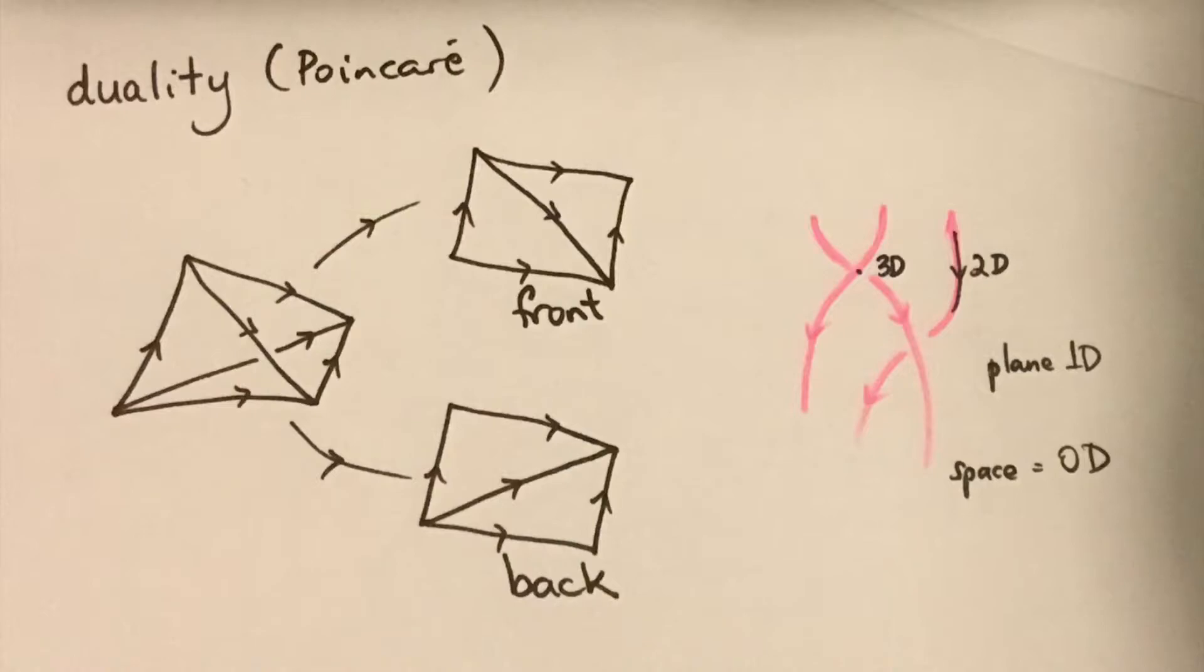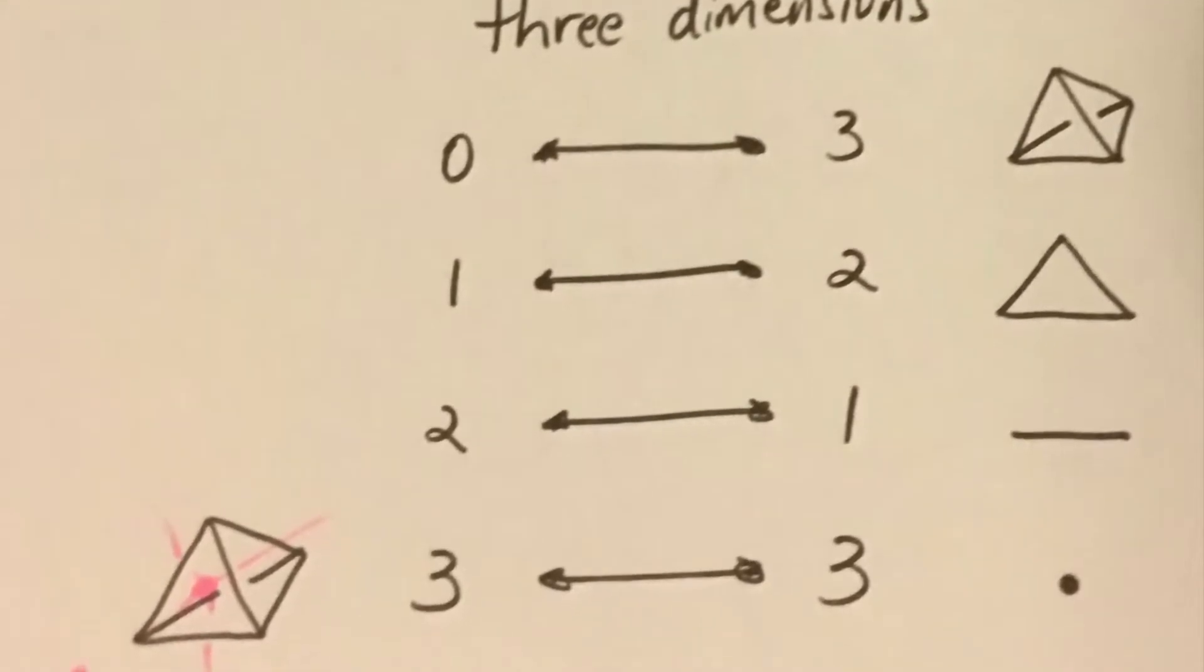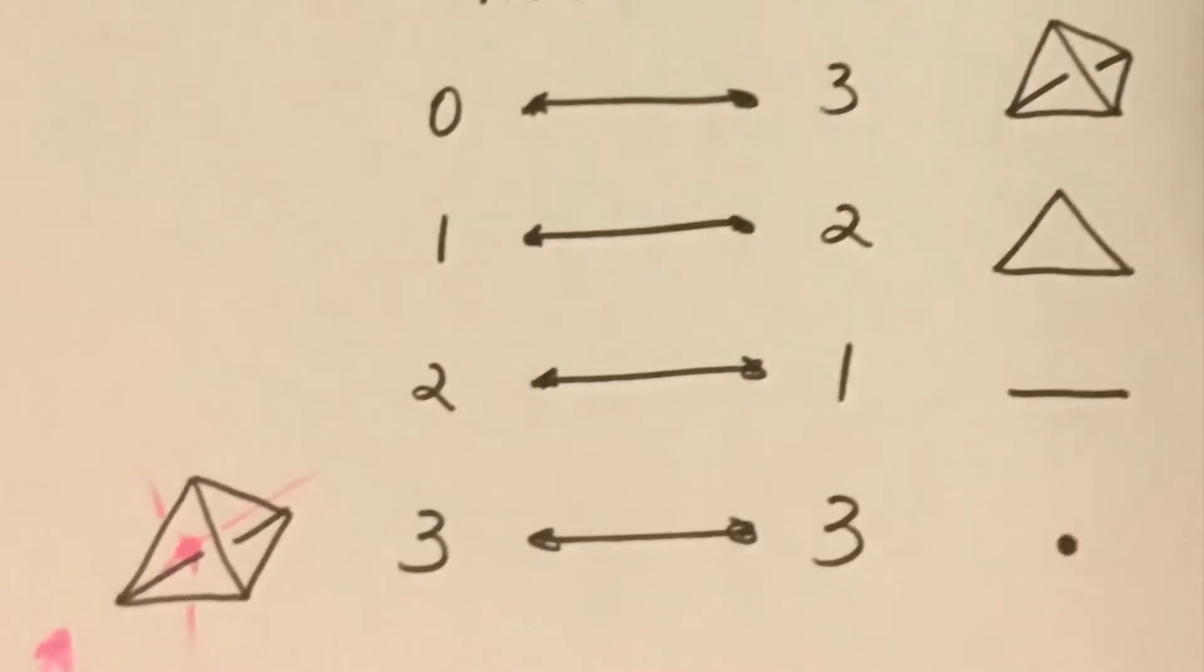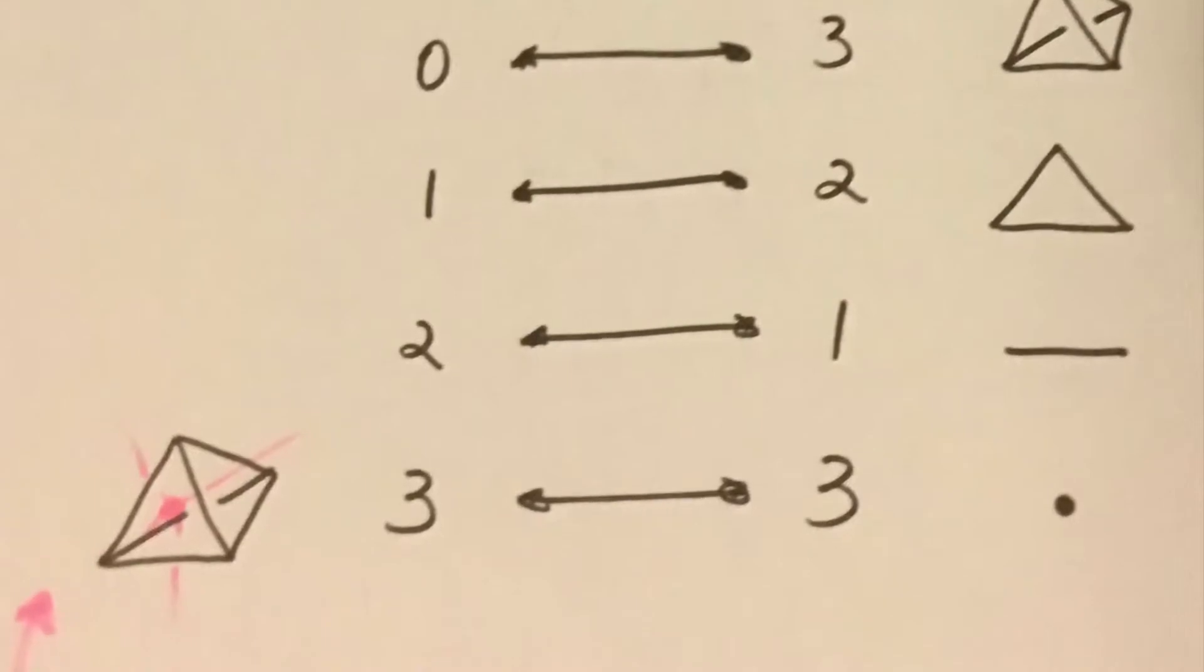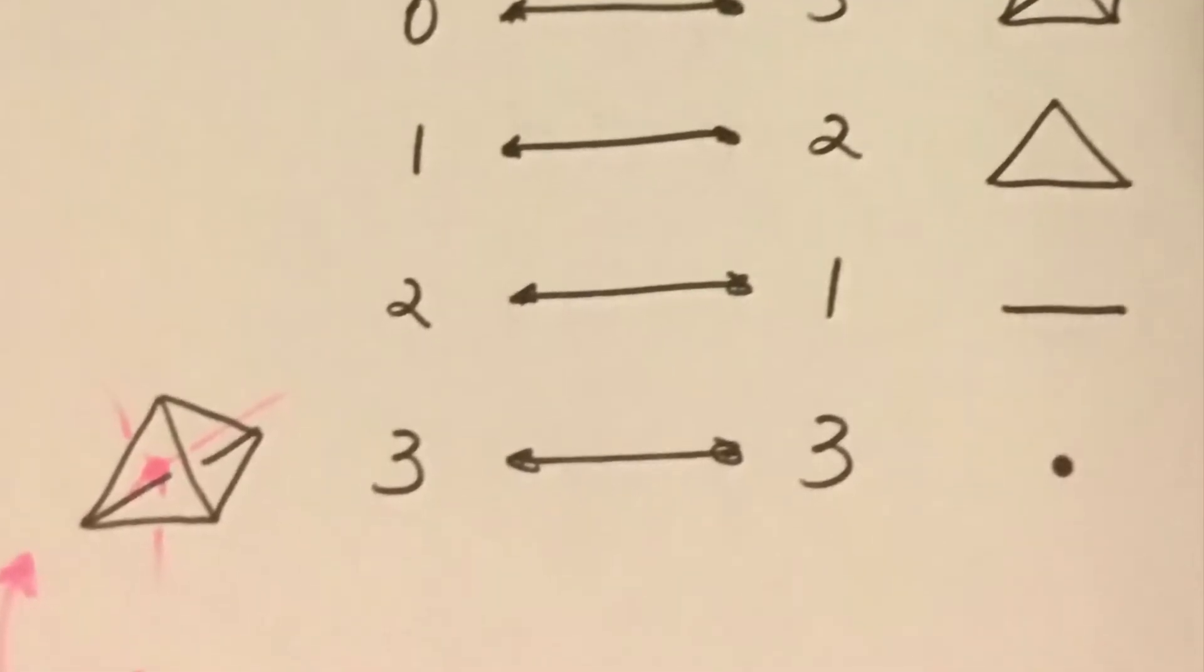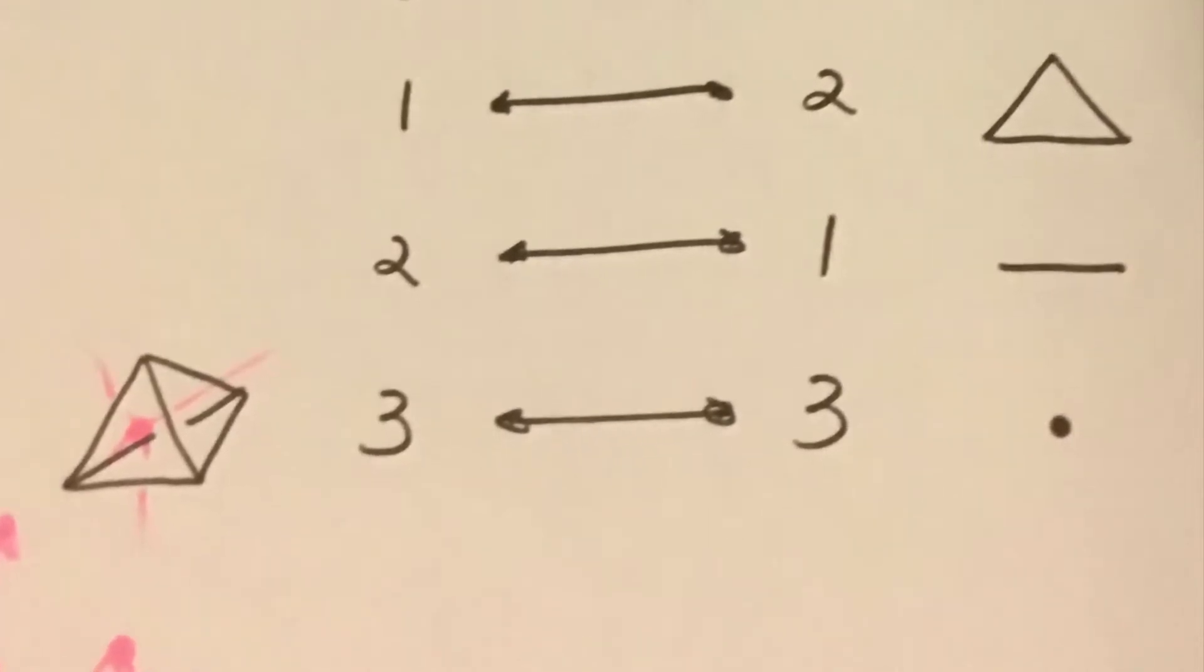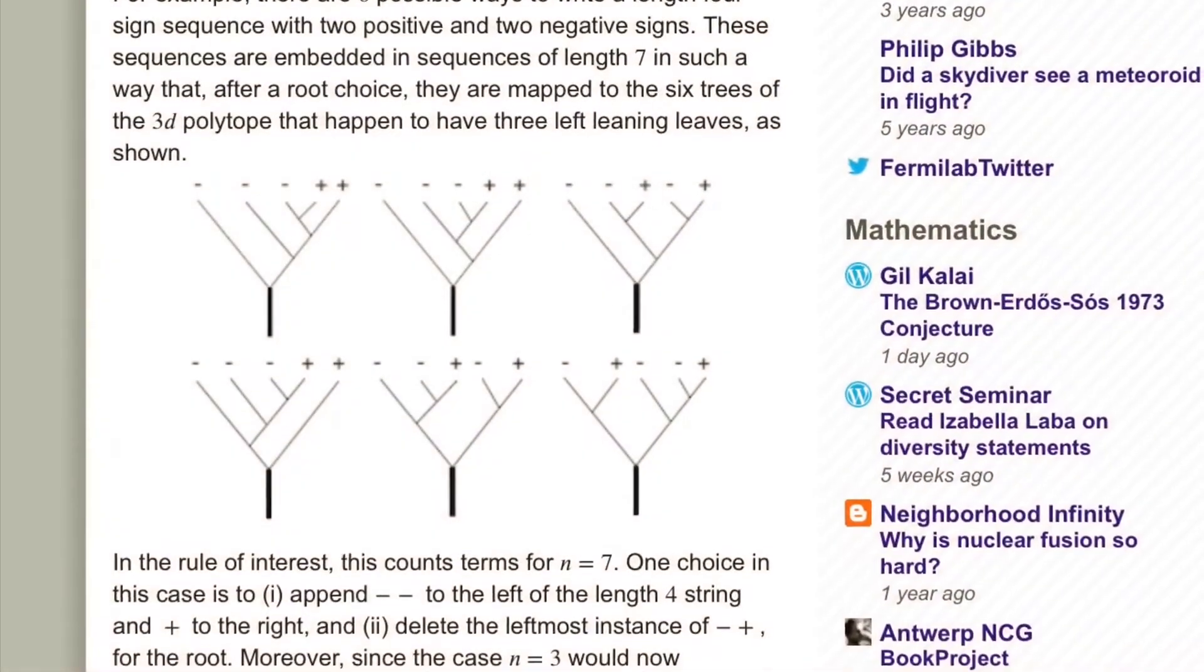Now a braid picture is dual to a 3 dimensional picture in the following way. In 3 dimensions we want points to be dual to tetrahedra. Lines to be dual to triangles. Triangles to be dual to lines. And tetrahedra to be dual to points. So we're swapping dimensions on the numbers 0, 1, 2, 3. Now if you think about that a tetrahedron becomes a tetrahedron. Which means that a tetrahedron is dual to itself.